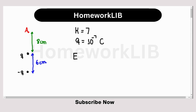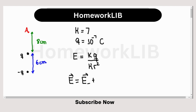Remember that the electric field generated by a charge q in a medium with dielectric constant kappa is equal to k — where k is the Coulomb's constant — times q, divided by kappa, times the distance squared. In our case, the total electric field will be the electric field generated by the negative charge plus the electric field generated by the positive charge.